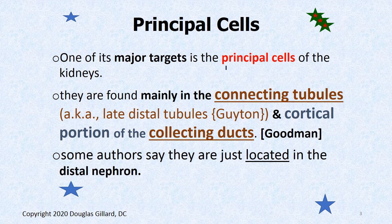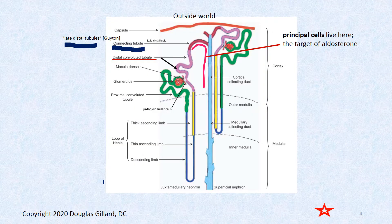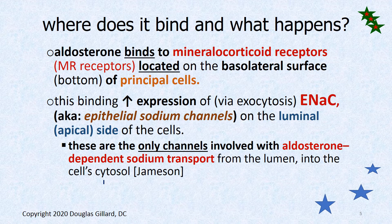The principal cells are the targets, and they're found mainly in the connecting tubules. Some authors just say they're located in the distal part of the nephron. Where does aldosterone bind and what's the story? How does it attach to these principal cells?